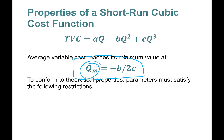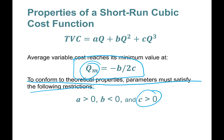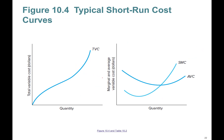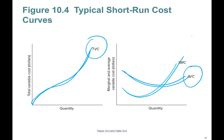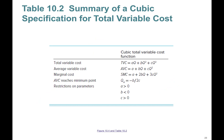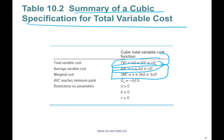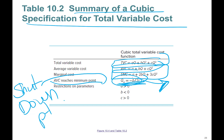The minimum point of the AVC curve — call it q_m — is negative b over 2c. To conform to theoretical properties: c must be greater than zero for a convex AVC curve, a must be positive, and b must be negative. This gives the S-shaped TVC, U-shaped AVC, and U-shaped marginal cost curve. This minimum point is also called the shutdown point — the price below which you shut down.